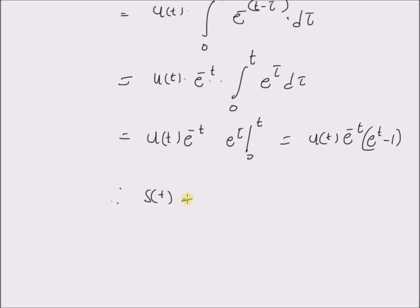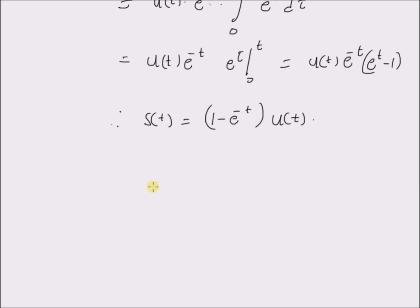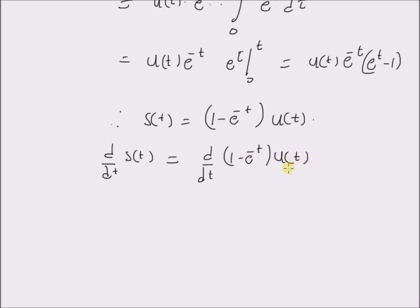This is equal to u of t times e power minus t times (e power t minus 1). Therefore the unit step response s of t is equal to (1 minus e power minus t) multiplied by u of t. Now we can easily verify the relation between the unit step response and the impulse response. So the derivative of s of t is equal to the derivative of (1 minus e power minus t) into u of t.